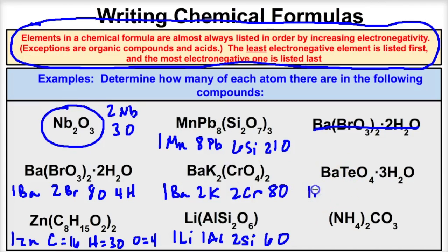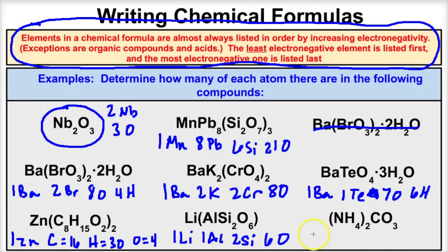The next compound has one barium, one Te, four oxygens plus three oxygens which makes seven oxygens total, and six hydrogens. The last compound shown — ammonium carbonate — has two nitrogens, eight hydrogens, one carbon, and three oxygens.